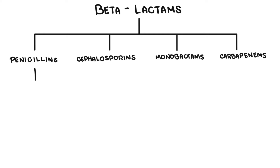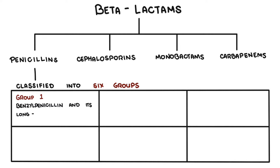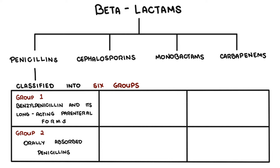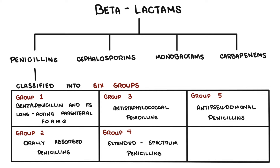Specifically talking about penicillins, they can be classified into six big groups. Group one are your benzyl penicillins, a long-acting parenteral form. Group two are your orally absorbed penicillins, such as phenoxymethylpenicillin. Group three are your antistaphylococcal penicillins, such as flucloxacillin. Group four are your extended spectrum penicillins, such as amoxicillin. Group five have anti-pseudomonal properties, such as piperacillin. And group six are beta-lactamase-resistant penicillins.